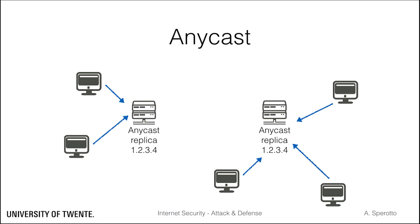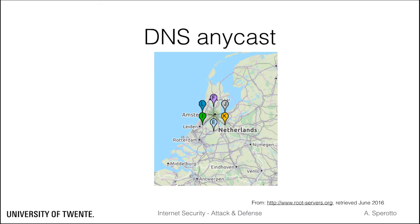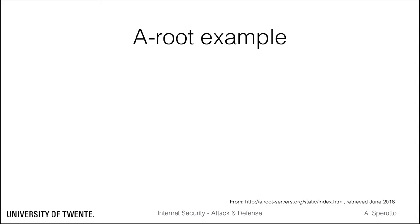Anycast has the advantage of introducing redundancy in a service, which is beneficial for resilience and performance. In the case of the root servers, this means that hundreds of replicas are scattered all over the world. For example, Amsterdam hosts replicas for servers E, F, I, J, K and L. Coming back to the attack, this is an example of how one of the root servers, the A root, operated by VeriSign, has seen the attack.